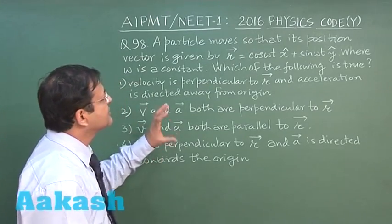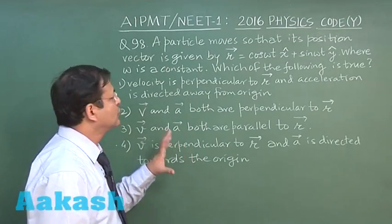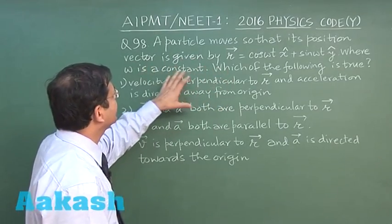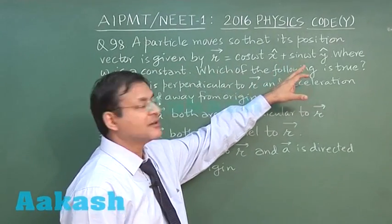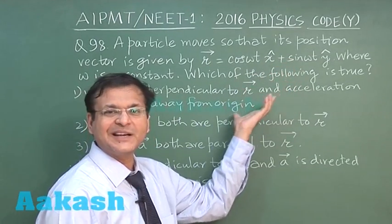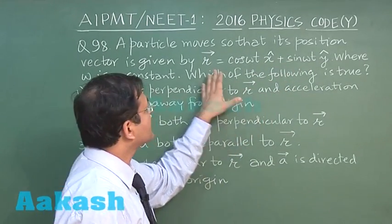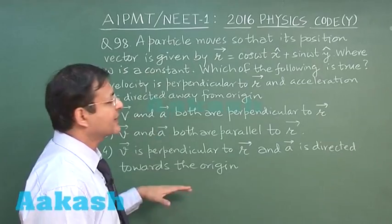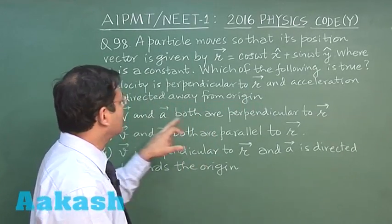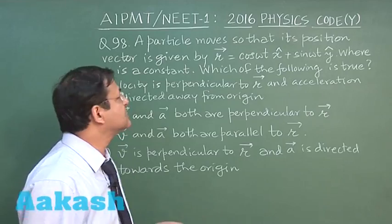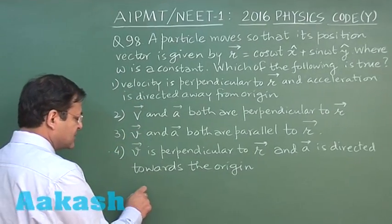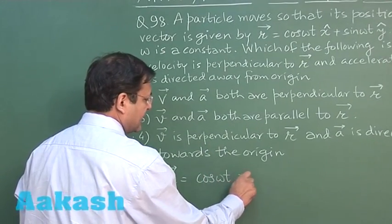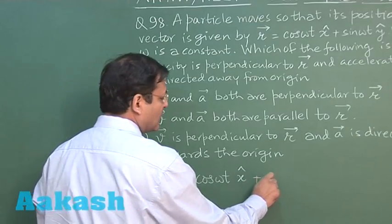Now this is the question in which you will be using a little bit of calculus to derive the correct answer. It says that a particle moves so that its position vector is given by, this is the position vector given. This is x cap, y cap. You can treat it like i cap and j cap. It is in the form of cos omega t and sin omega t, where omega is a constant. Now which of the following is true? In the option you can see they are talking about the velocity and acceleration, so it is very much imperative that if you differentiate, the r vector has been given as cos omega t x cap plus sin omega t y cap.